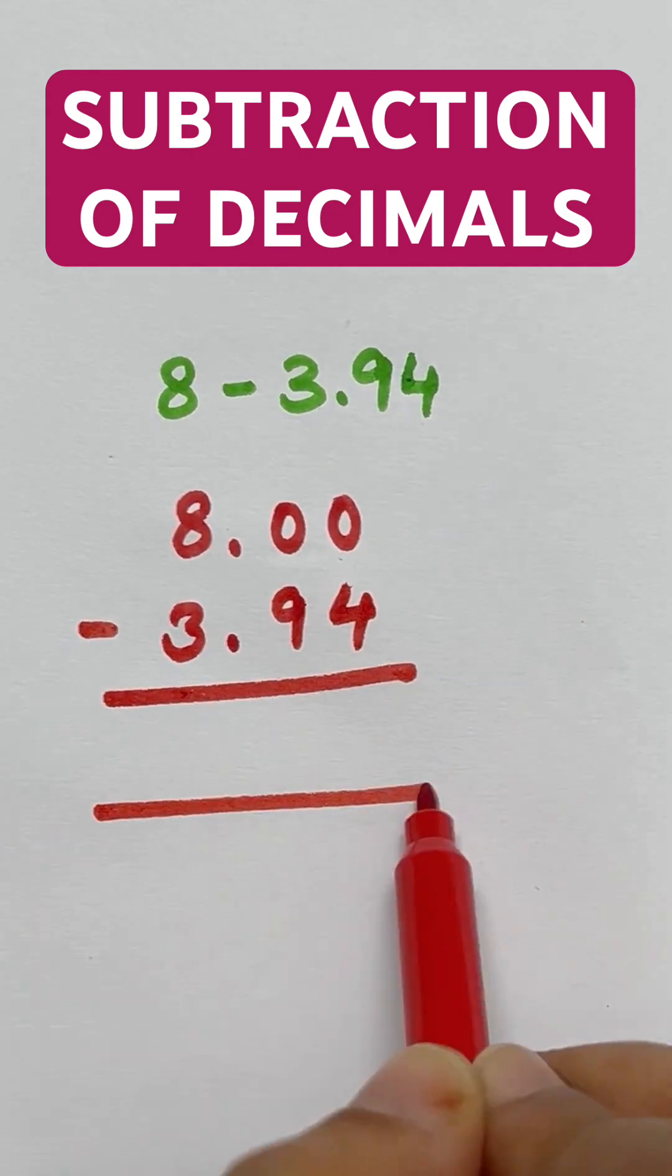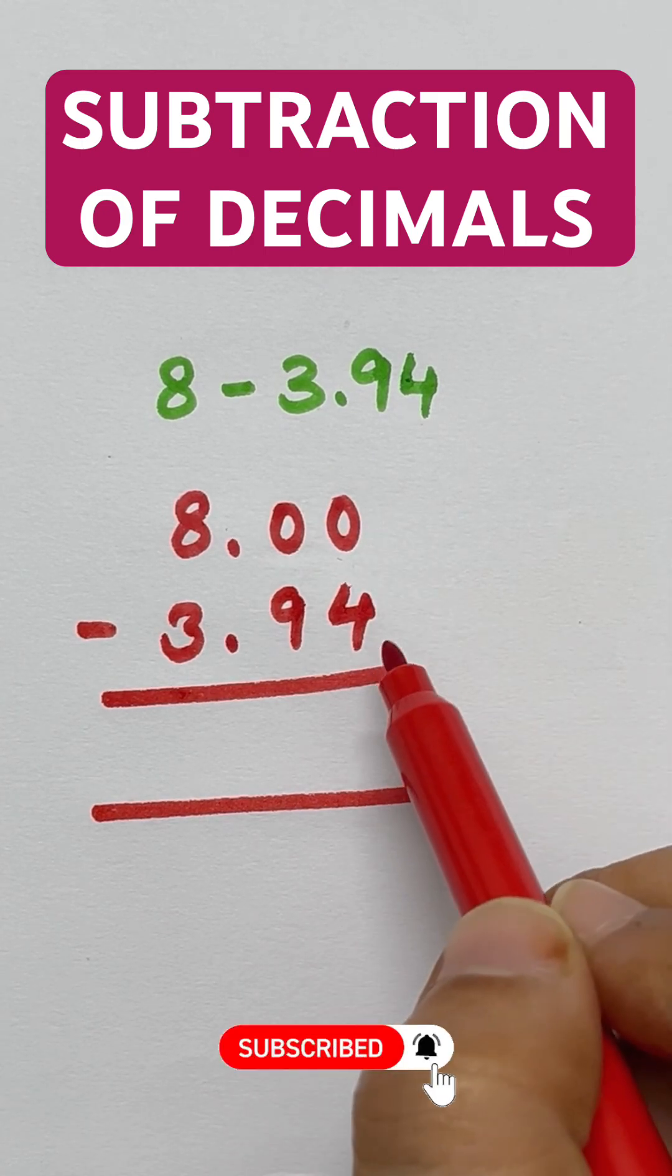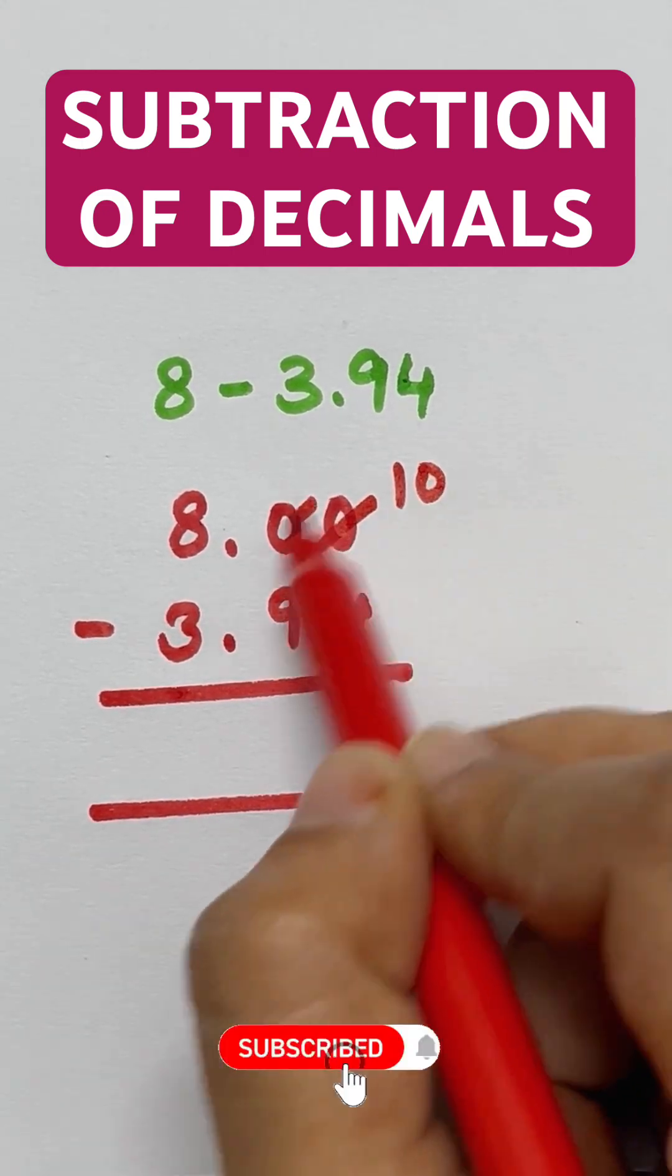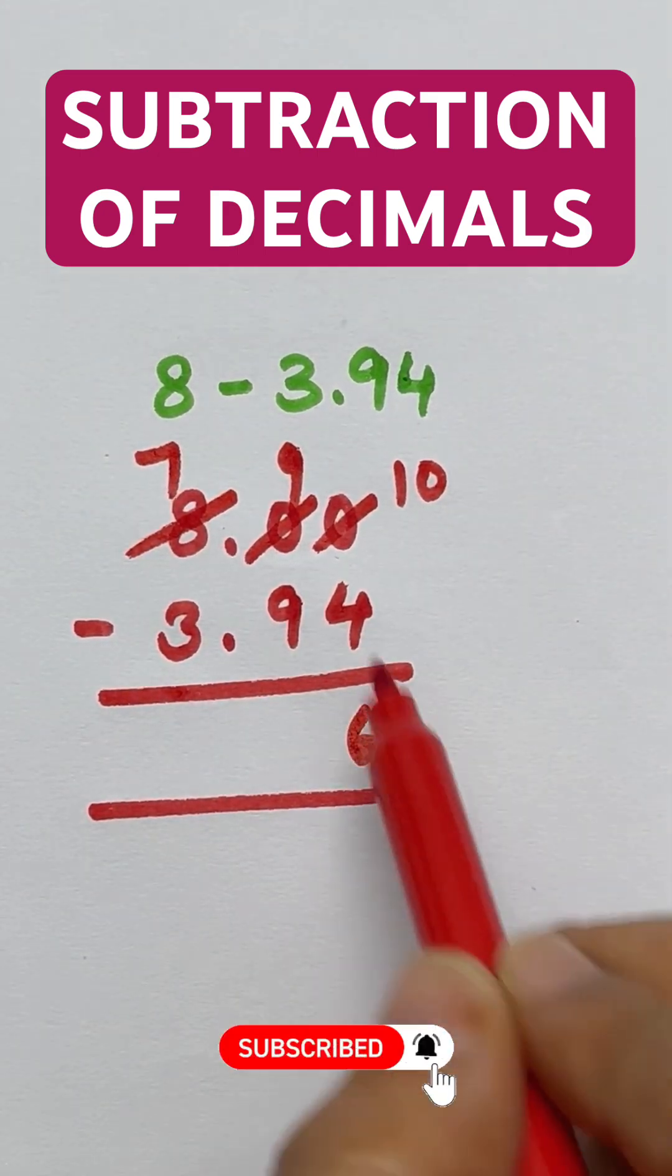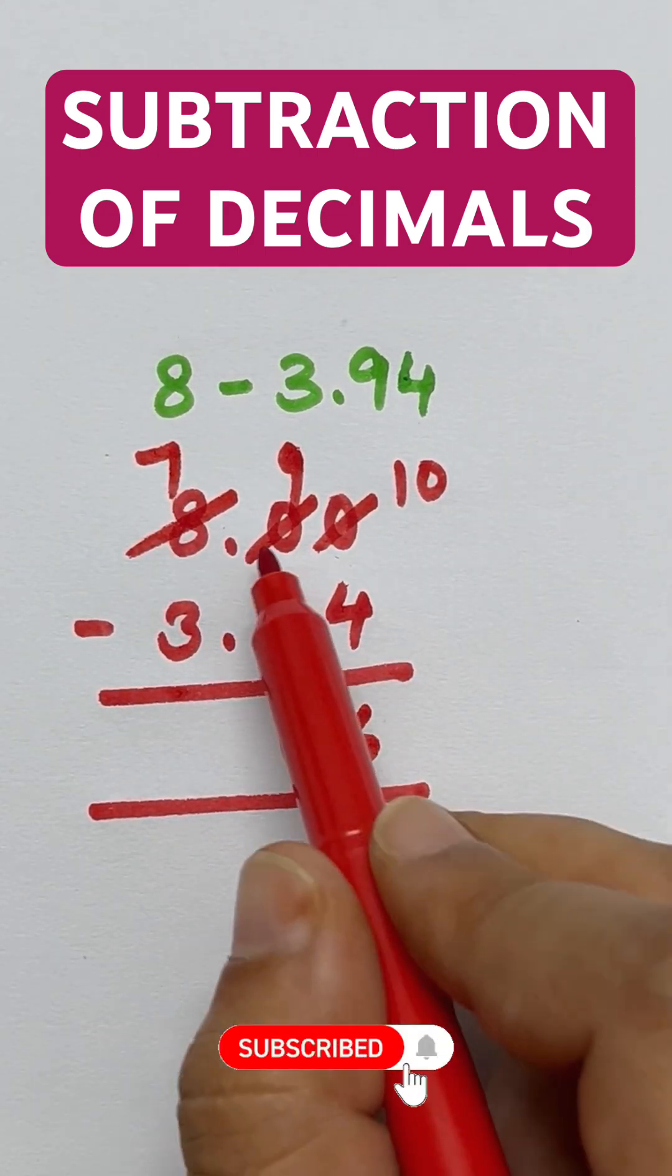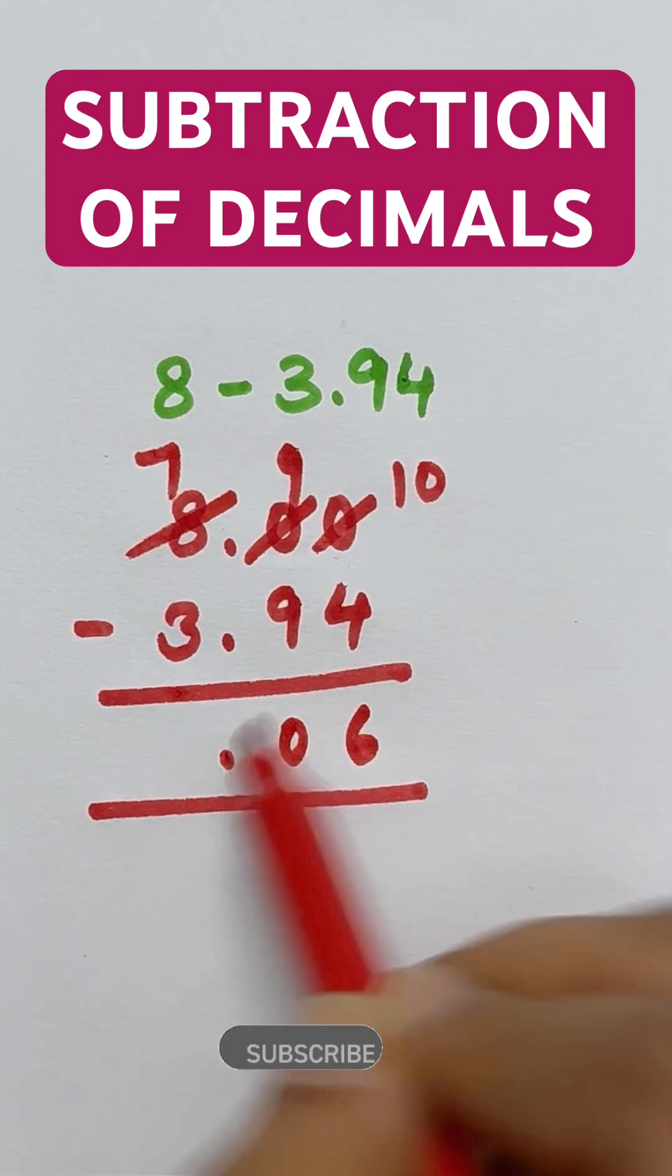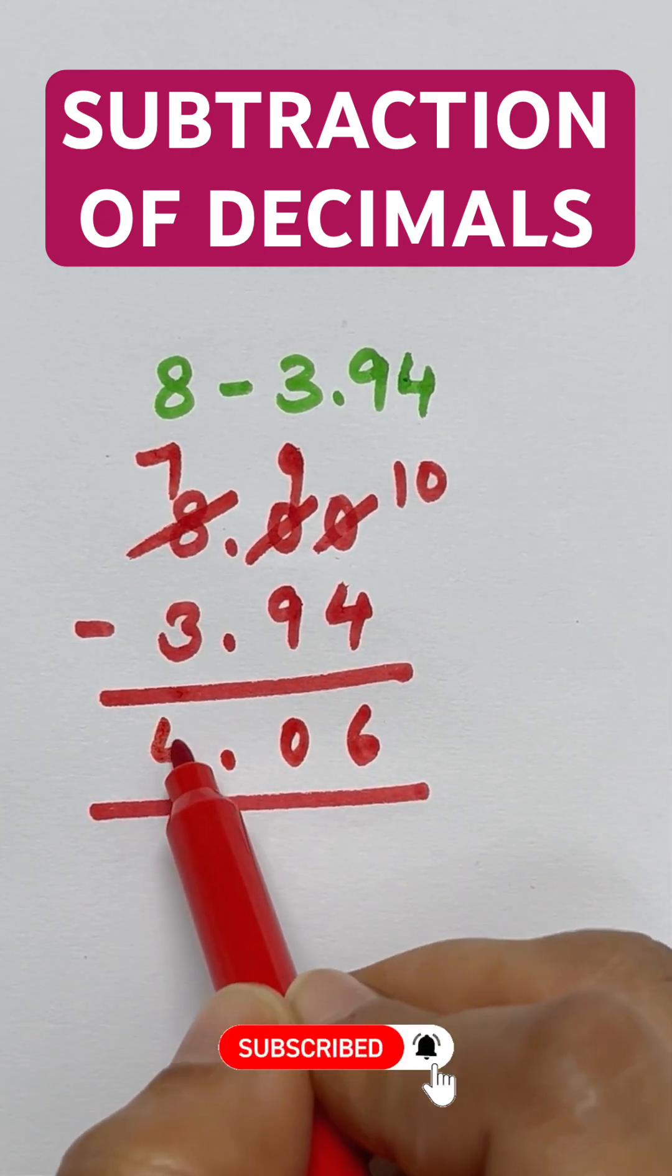We will subtract now. 0 minus 4, we can't subtract, we will borrow. So 10 minus 4 is 6, 9 minus 9 is 0. Below this decimal point, we will put a decimal point in the answer. And 7 minus 3 is 4.